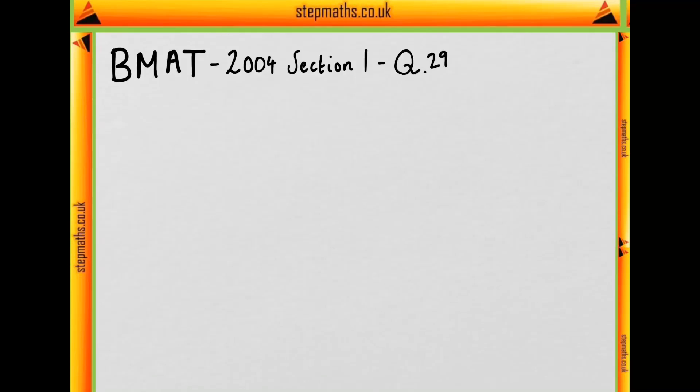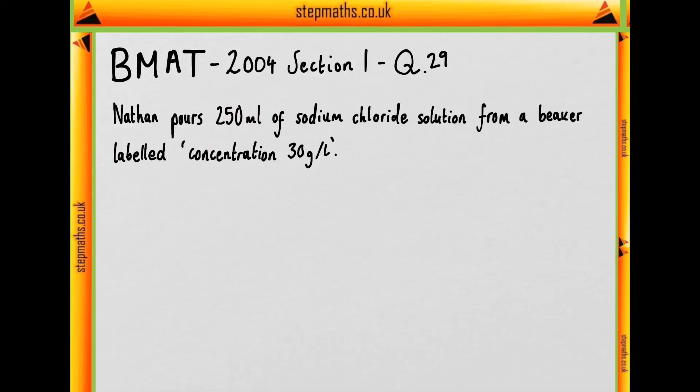In question 29, we're told that Nathan pours 250 ml of sodium chloride solution from a beaker labeled concentration 30 grams per litre into another beaker.